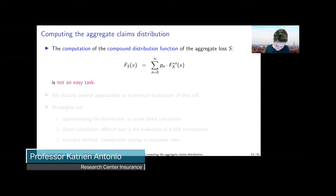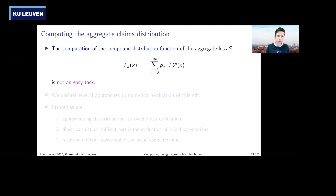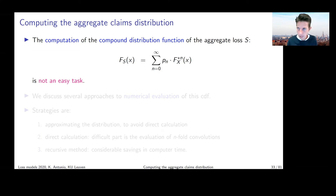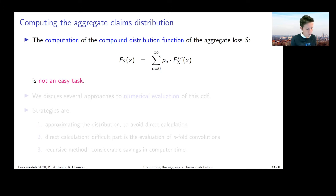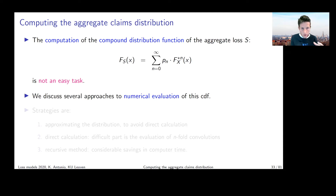We're now ready to start thinking about how to compute the aggregate claims distribution. Last week we did quite some effort to express the CDF of a compound sum S using the n-fold convolution of the severity distribution of X in the compound sum. But working with n-fold convolutions is not an easy task. So in this chapter, we're going to launch a couple of approaches that help you get grip on the distribution of S while avoiding the calculation of the n-fold convolution.